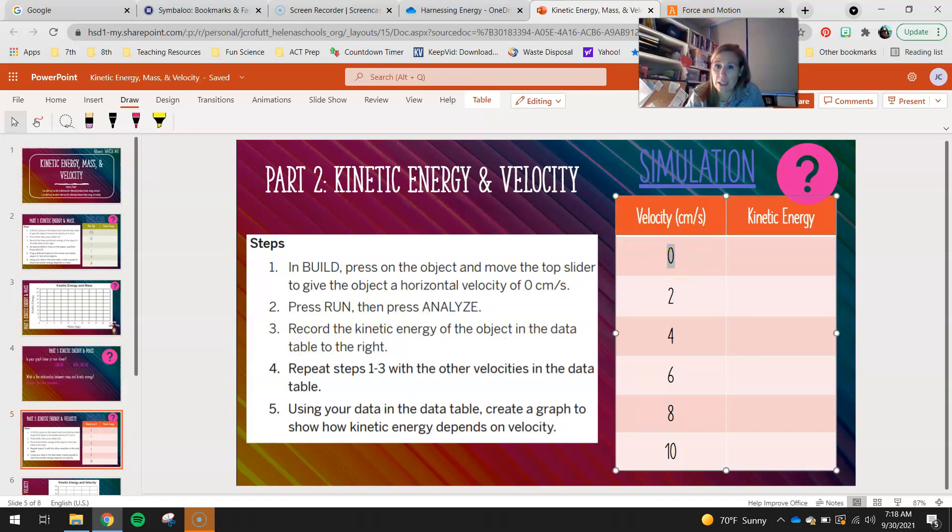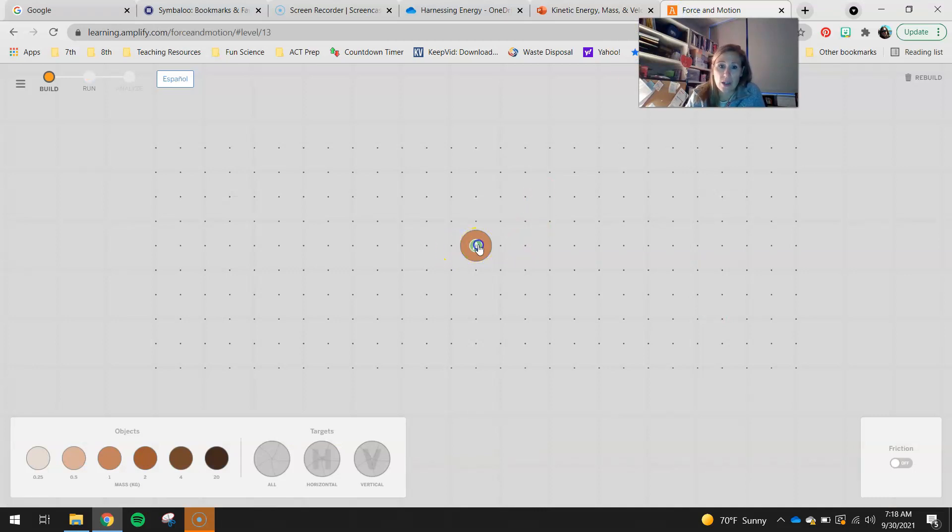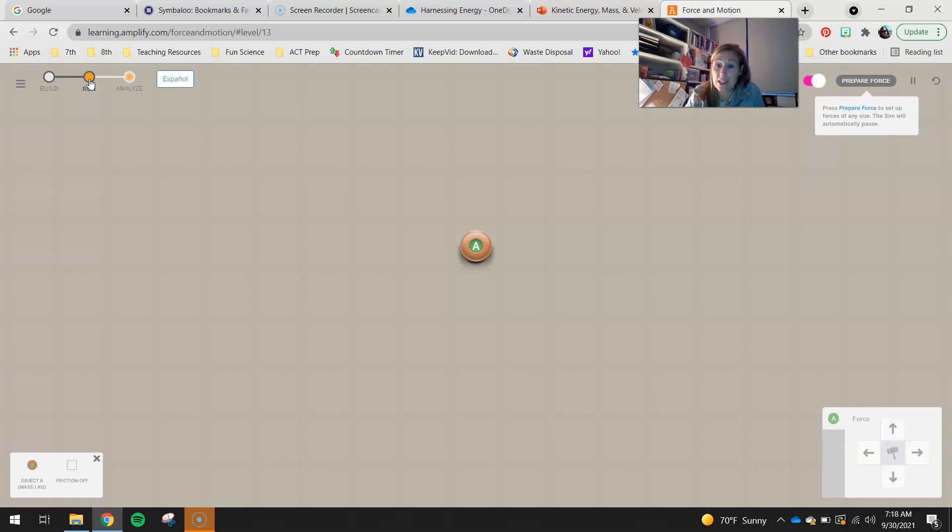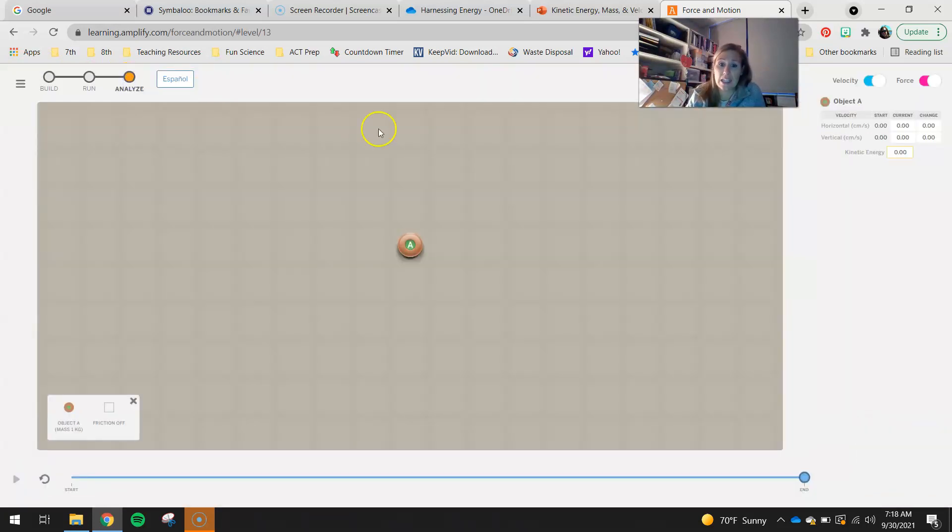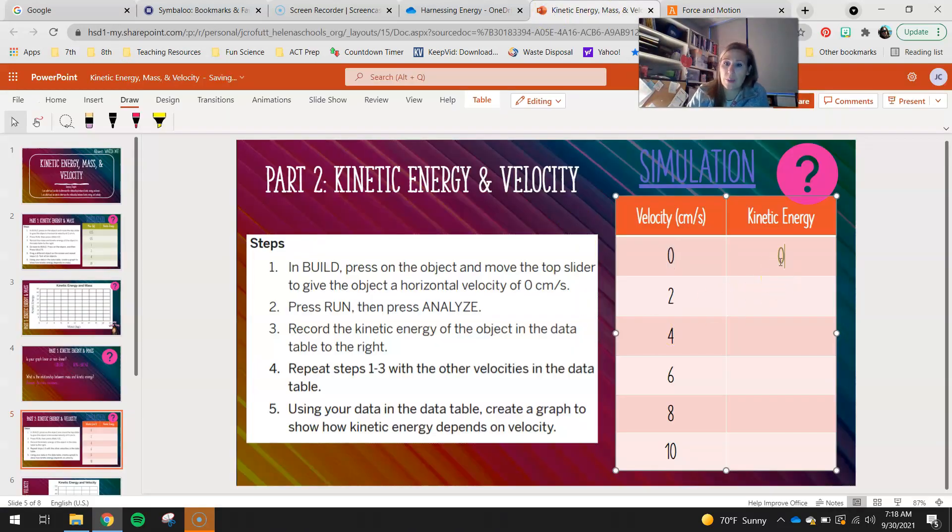So our first thing that we're going to be doing is our velocity right there. So I'm going to click on it. It's going to stay zero. I'm going to hit run. Obviously, if it's not moving, it doesn't have a velocity.